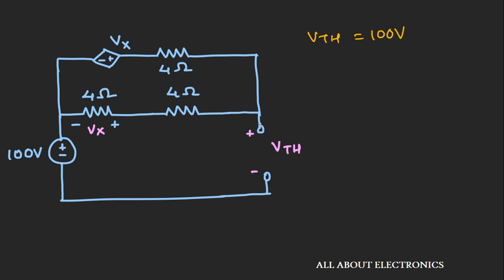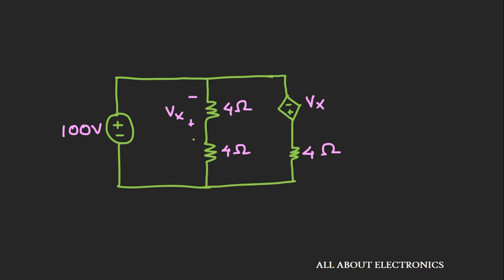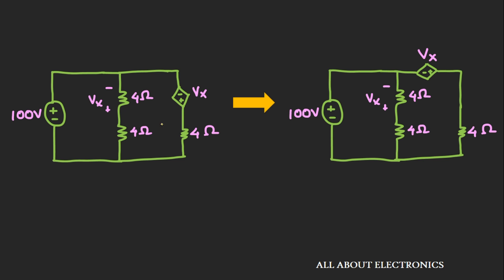Now let's find the short-circuit current across the two terminals by shorting them. The short-circuit current is entering the 100V voltage source, so the same current must be supplied by it. Redrawing the circuit, we have two nodes — node 1 and node 2 — with a voltage source connected between them, forming a supernode. Let I1 be the current through node 1 and I2 be the current through node 2. I1 equals 100V divided by 8 ohm, giving 12.5A.